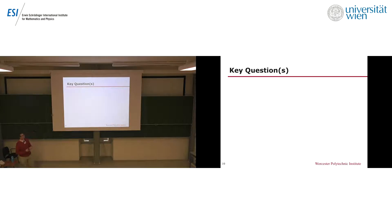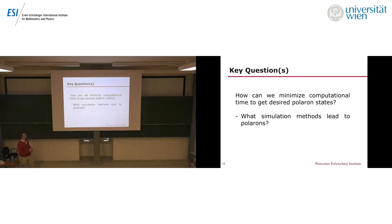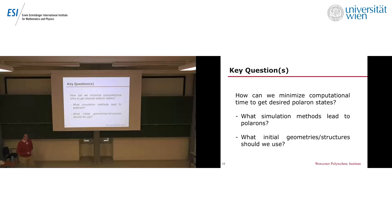That's really what leads me to what I want to address in my talk: how can we minimize the computational time to get the desired polaron states that we're trying to model? The key auxiliary questions are: what simulation methods lead to polarons, and what initial geometries or structures should we use to model polarons? These initial geometries are really key to forming polarons.